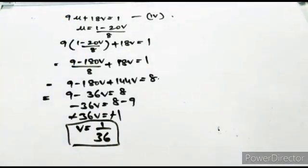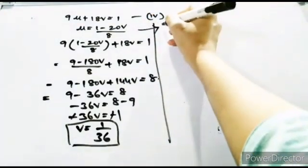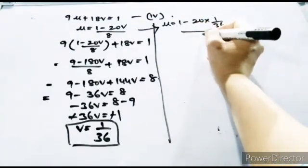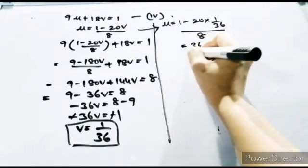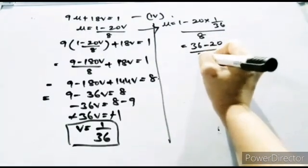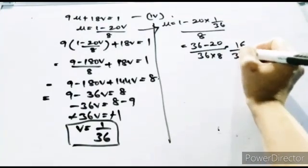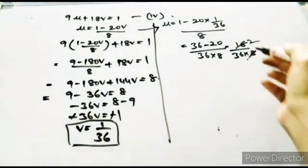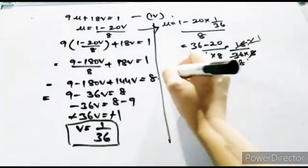Now substitute v = 1/36 back into u = (1 − 20v) / 8: u = (1 − 20 × 1/36) / 8 = (36 − 20) / (36 × 8) = 16 / 288 = 1/18. So u = 1/18.